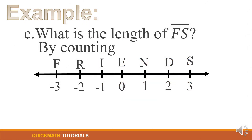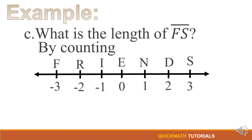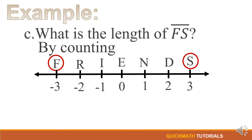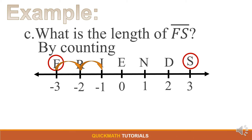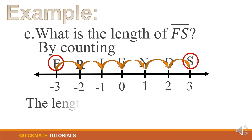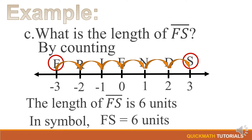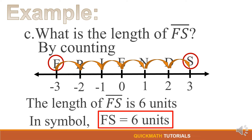The last example for the counting method is: what is the length of line segment FS? Our point F is here and our point S is here. By the counting method, we just count the steps from F to S: 1, 2, 3, 4, 5, and 6. Therefore, the length of line segment FS is 6 units. In symbol, FS = 6 units.